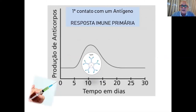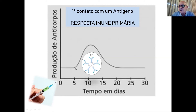Quando a gente entra em contato pela primeira vez com o antígeno, depois de alguns dias — cinco, seis, dependendo da infecção, da quantidade de antígeno e do indivíduo — conseguimos começar a detectar anticorpos. Só a partir daí é possível fazer testes sorológicos, como veremos em um vídeo sobre técnicas de diagnóstico.